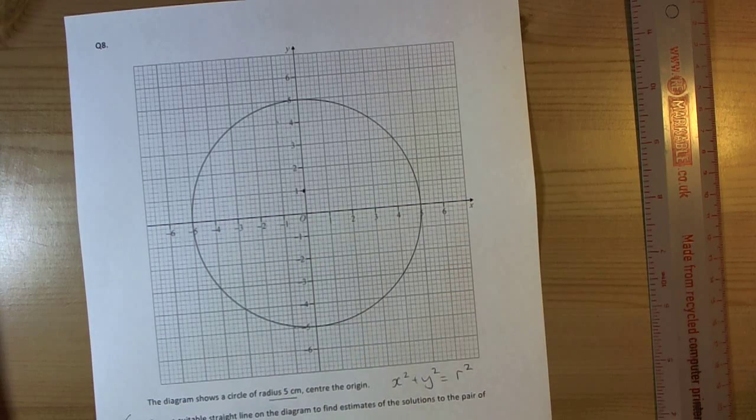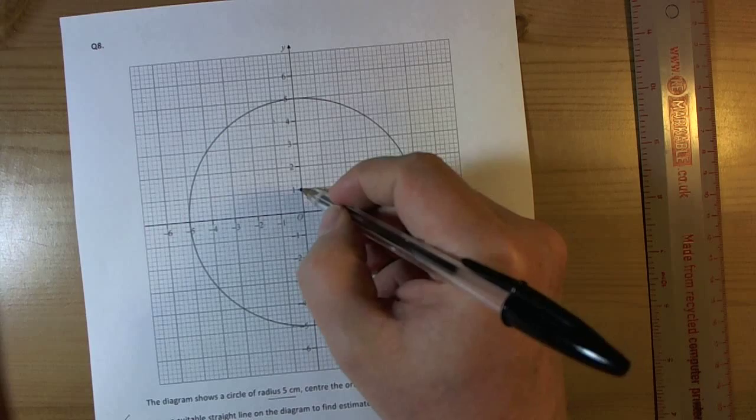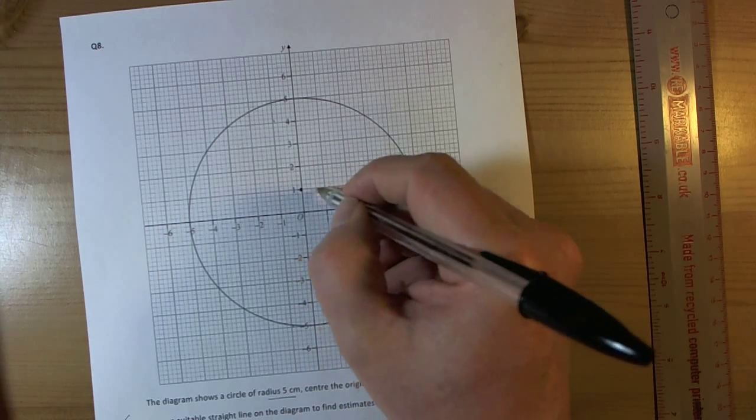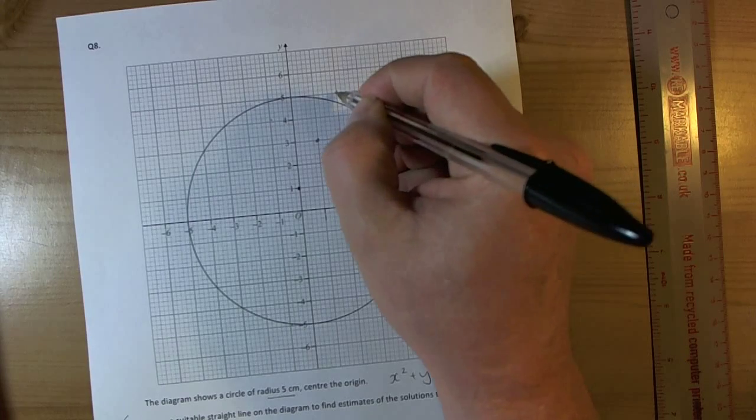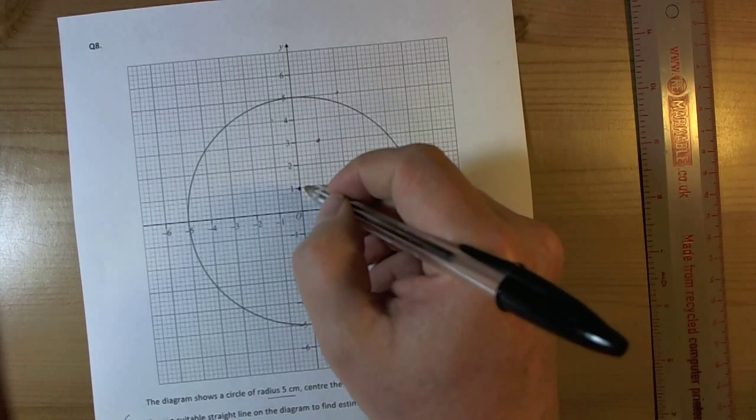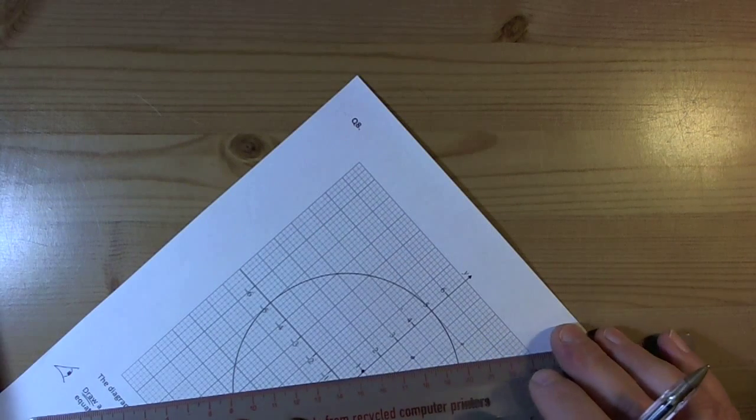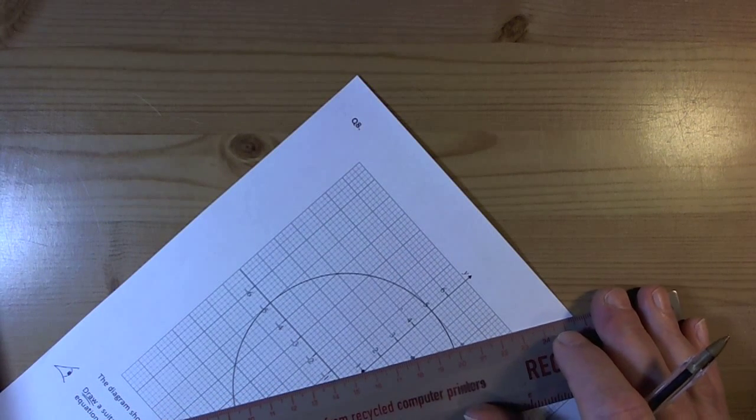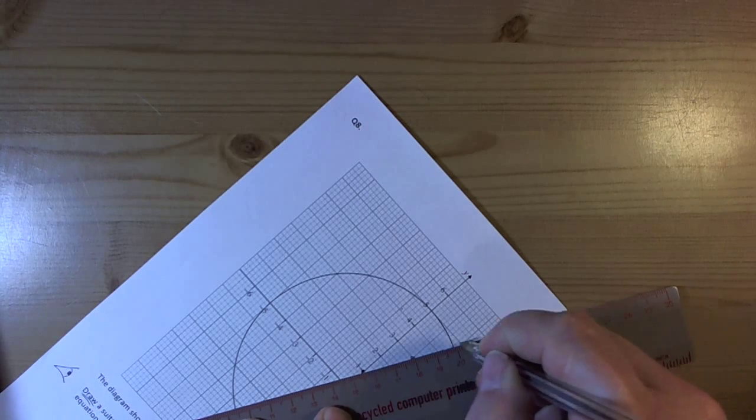And the gradient tells me that for every one you go across the x axis, you go up 2 on the y axis. So you look at the scale carefully, come across 1, up 2, come across 1, up 2, that gives me 3 points. And then I can get my ruler and draw a straight line as accurately as we can through the 3 points and across the whole circle.